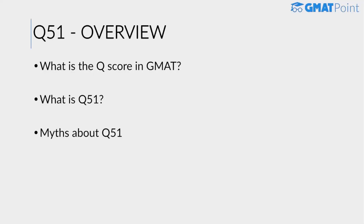So first, what is the Q score in the GMAT? The score out of 800 that a person receives in the GMAT comes from two components: the verbal score and the quant score. This is a weighted score that GMAT calculates, and no one knows exactly how they calculate it. The quantitative score is called the Q score — a scaled score out of 51. You can receive a score from 6 to 51 in quant, so 51 is the highest possible score.